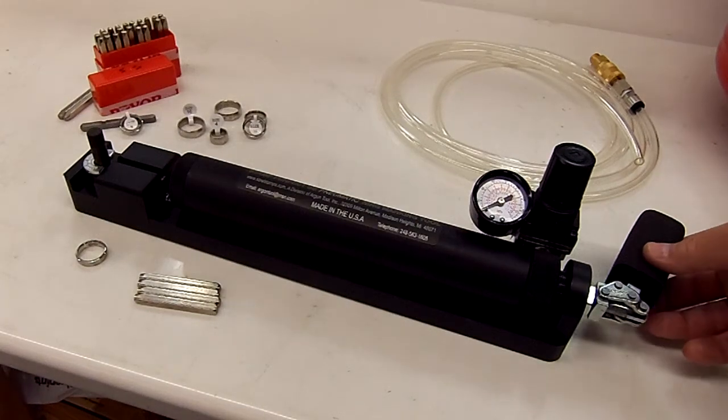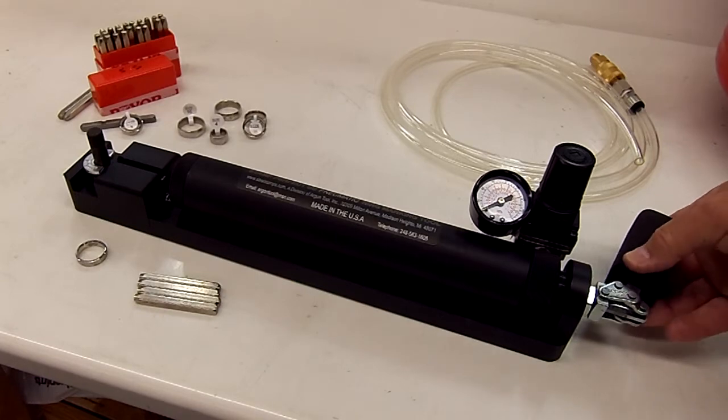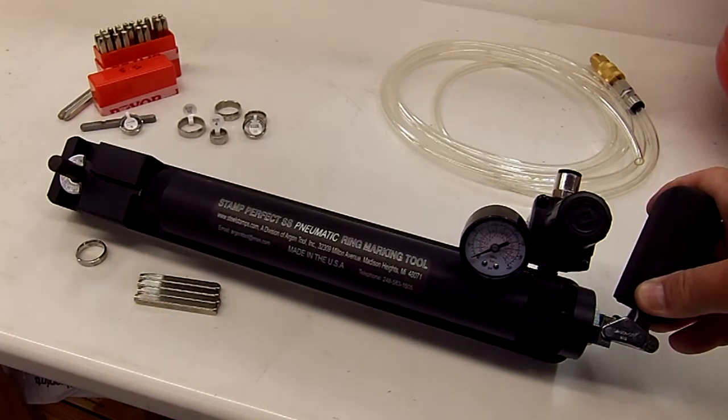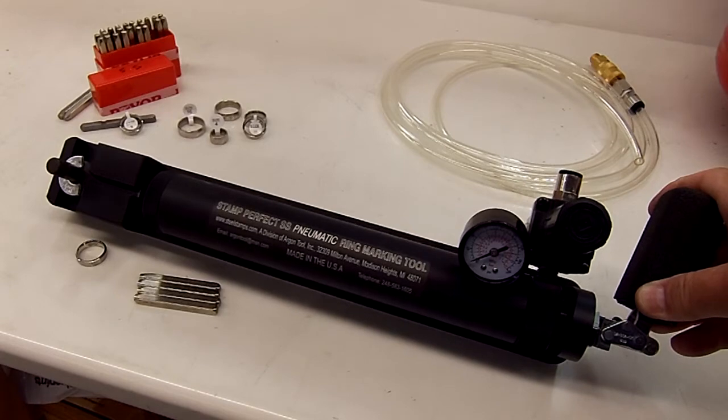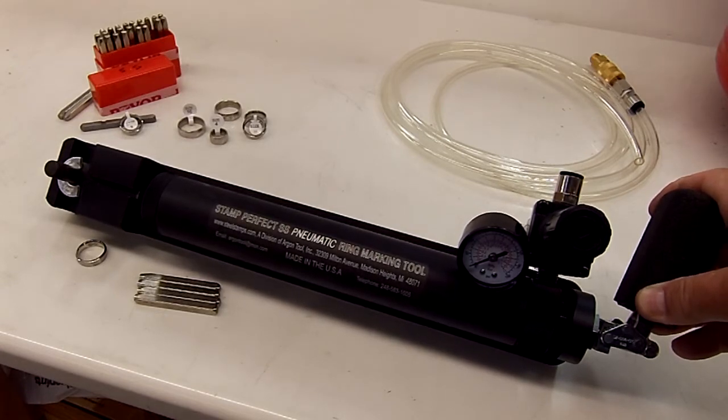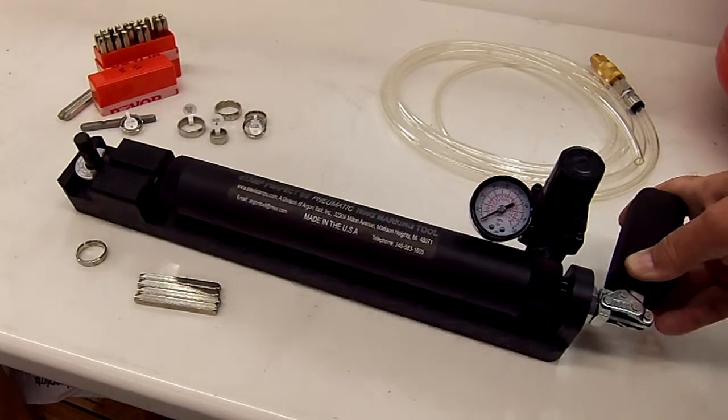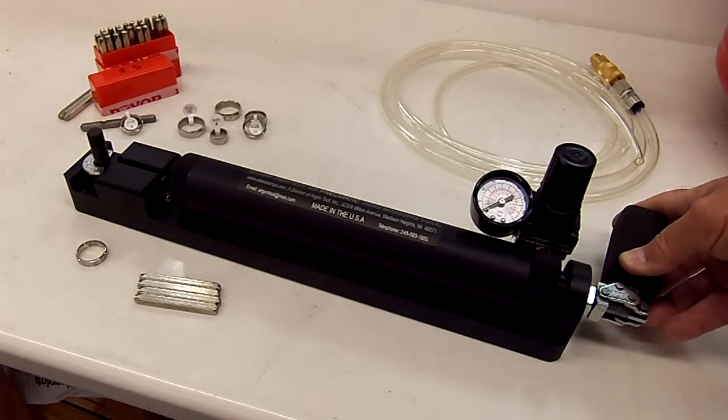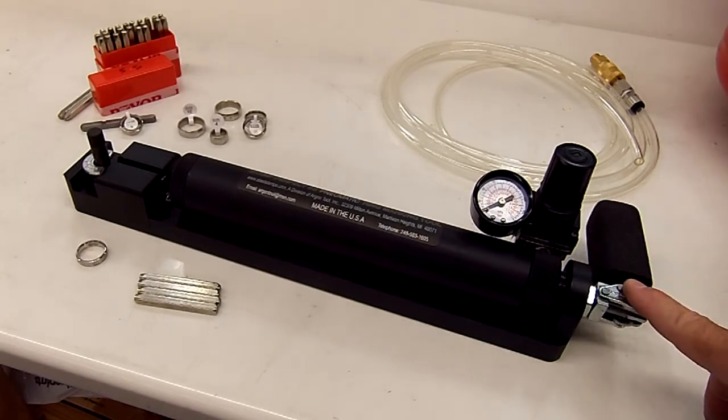Today I want to demonstrate our new ring marking machine. It's called the Stamp Perfect SS Pneumatic Ring Marking Machine from SteelStamps.com. This really makes marking rings very easy. No hammer needed. This is air-powered and it comes with everything you need except the air compressor.